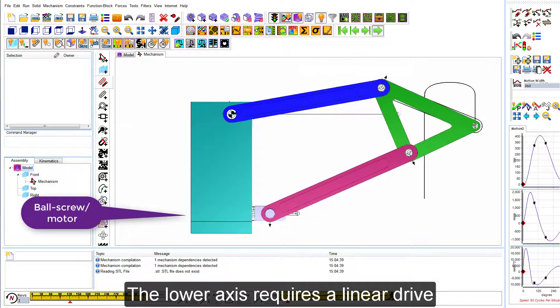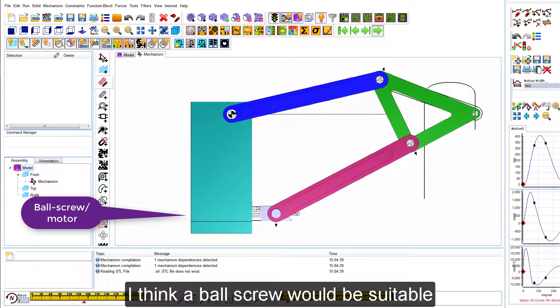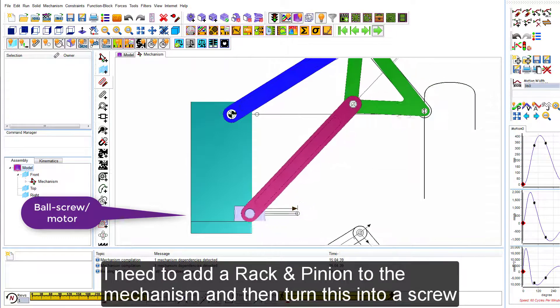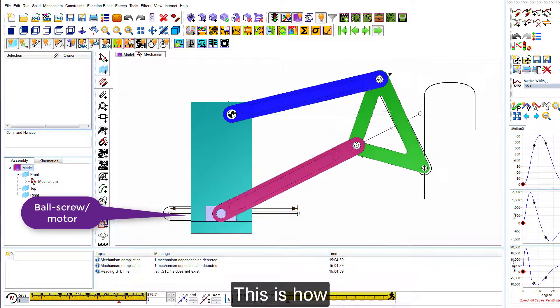The lower axis requires a linear drive. I think a ball screw would be suitable. I need to add a rack and pinion to the mechanism and then turn this into a screw. This is how.